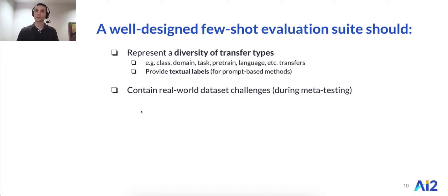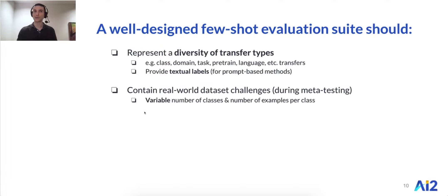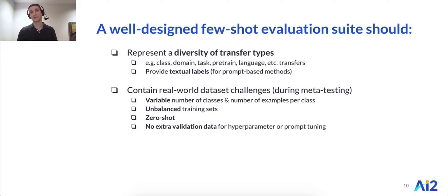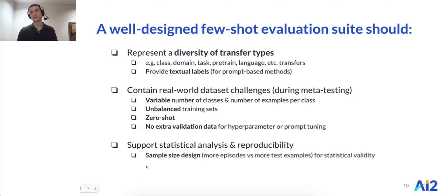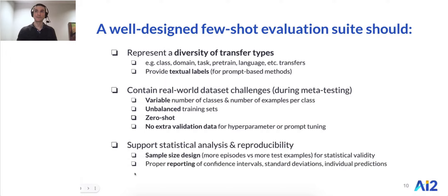Second, the suite should contain real-world dataset challenges when meta-testing. This includes having a variable number of classes and examples per class, having unbalanced training sets, zero-shot episodes, and also not allowing extra validation data for hyperparameter tuning, which negates the few-shot-ness of the episode. Third, the suite should support statistical analysis and reproducibility, including principled sample size design and proper reporting of confidence intervals.